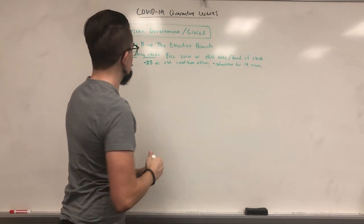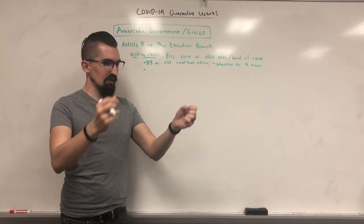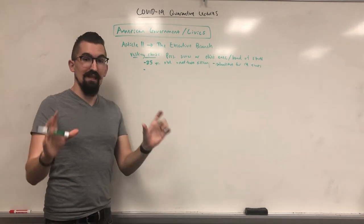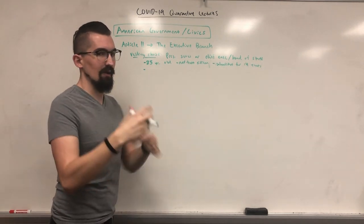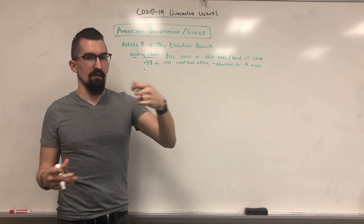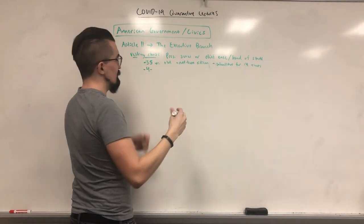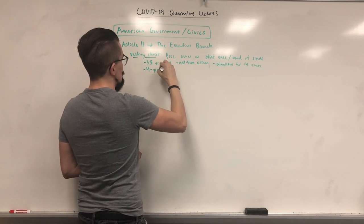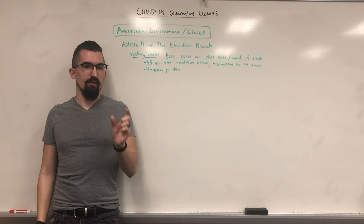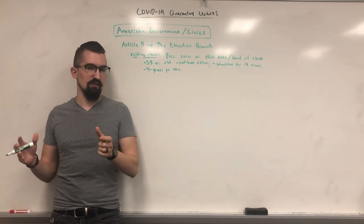Those are the qualifications. If you are elected — and we'll talk about the process of primary elections, caucus elections, the national convention, political parties, and the electoral college in more detail — the time limit per term is four years. Once you're elected you're president for four years, and then you would potentially have to run for election again. Originally there was no cap on how many times you could be elected, although George Washington set the precedent of doing it twice and then calling it quits.